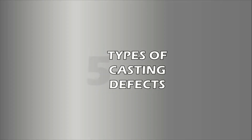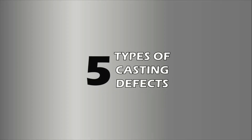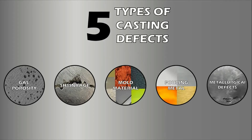There are many types of casting defects, so they are broken down into five main categories: gas porosity, shrinkage, mold material, pouring metal, and metallurgical casting defects. They can be subdivided further.